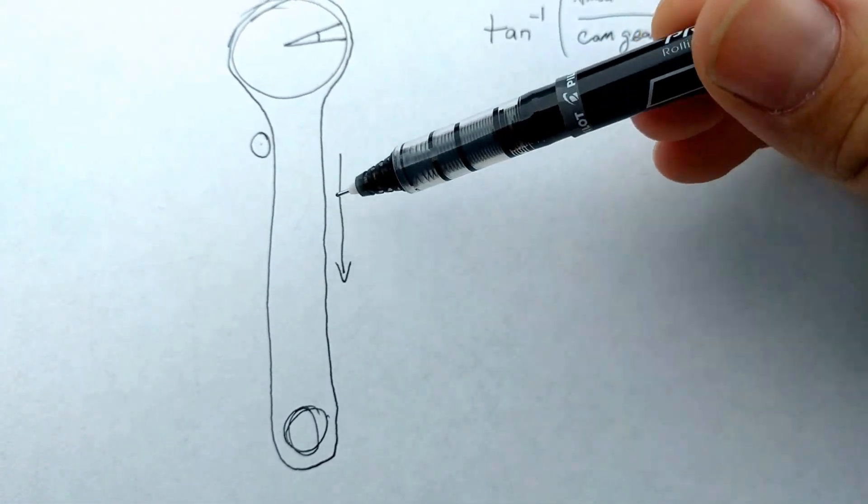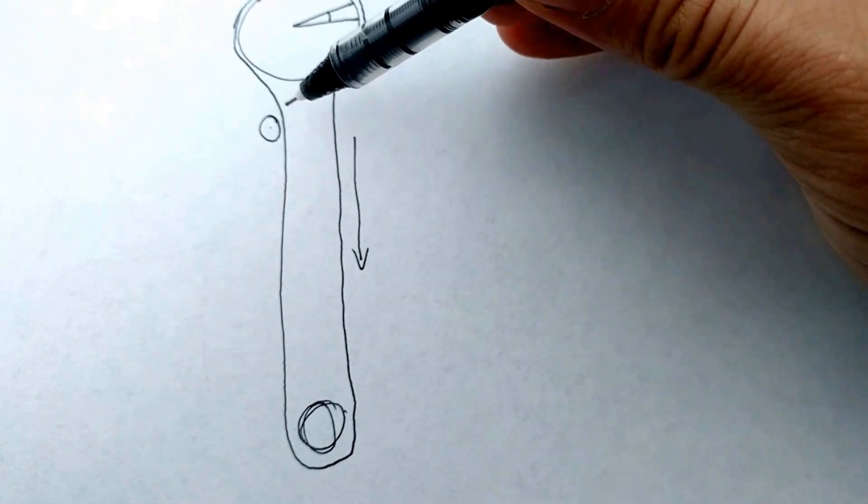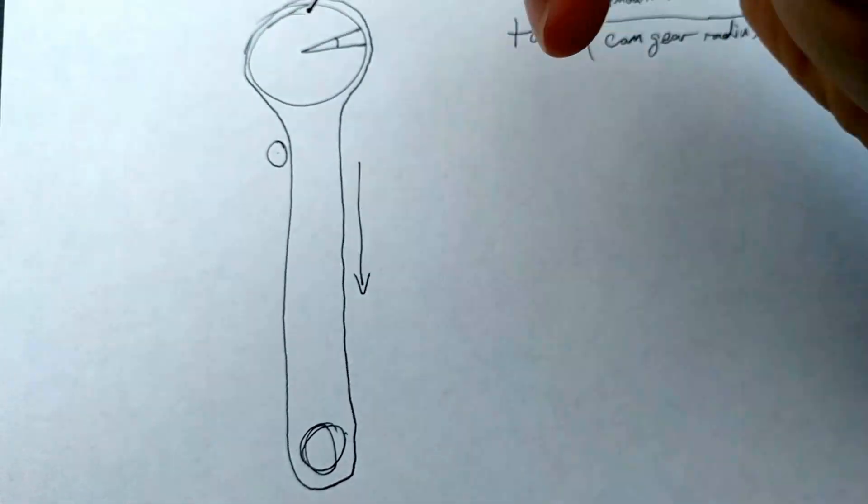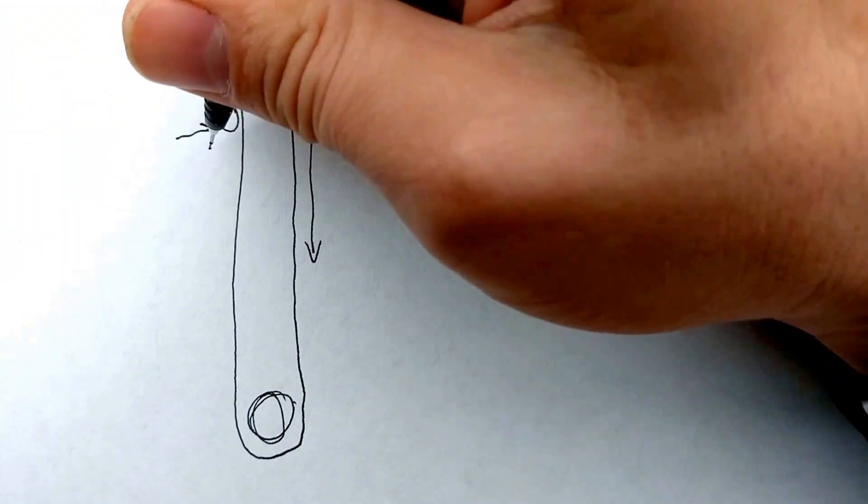So if you move these two closer together, you will put slack in the belt at both sides. You take up the slack by tightening your tensioner.